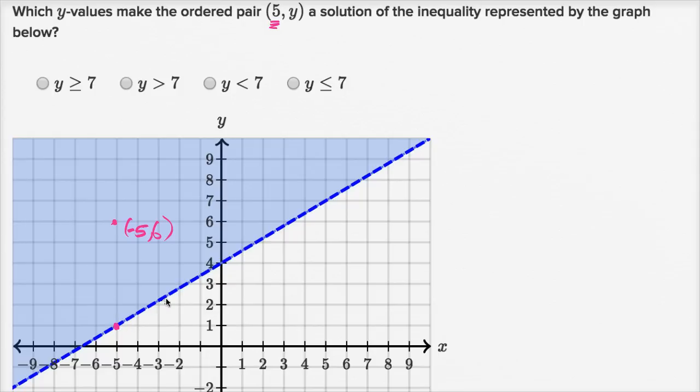Because notice, the line, as you can see, this lower boundary line is a dashed line. If it was filled in, then anything on the line would be a solution. But since it's dashed, things on the line aren't solutions. It's only things that are above the line are going to be solutions.